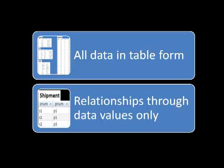Any connections between the tables are made through data values. For example, how do we know that that is Smith? Because S1 was in one table and S1 was in another. We know that's the connection. So the connection between those two tables occurred simply by the presence of common data values. That's the simple relational model.